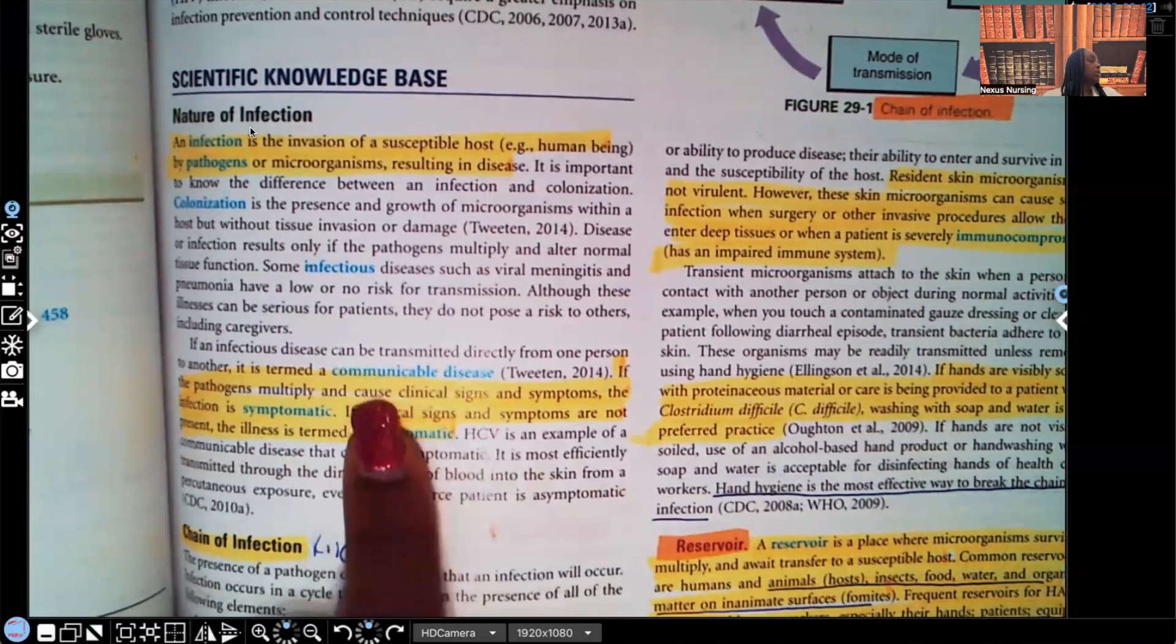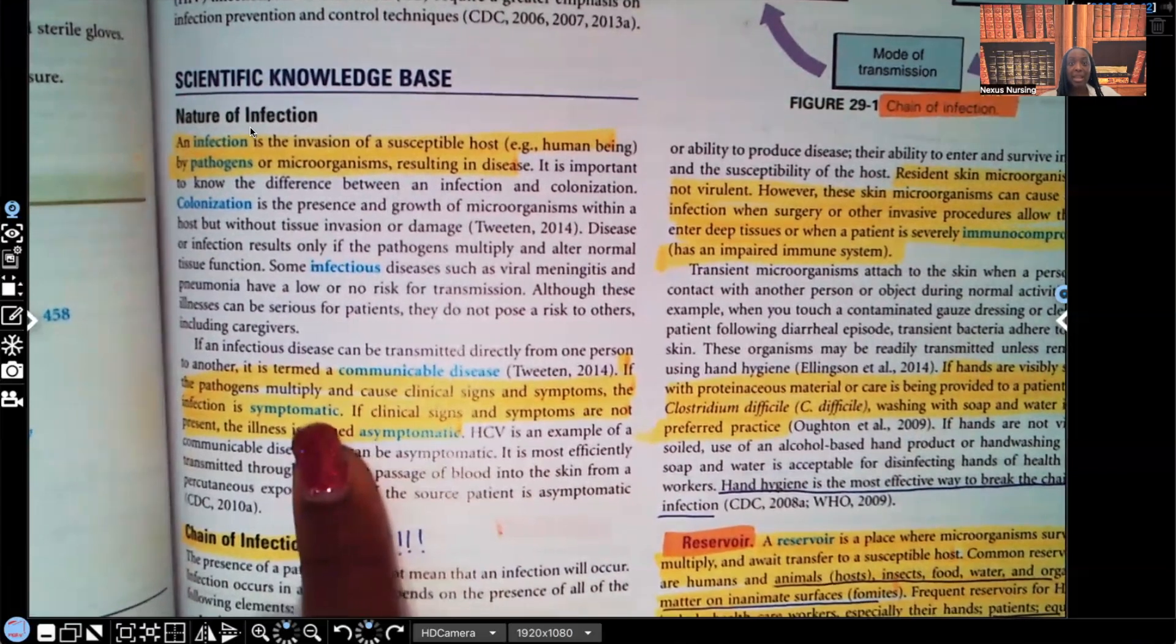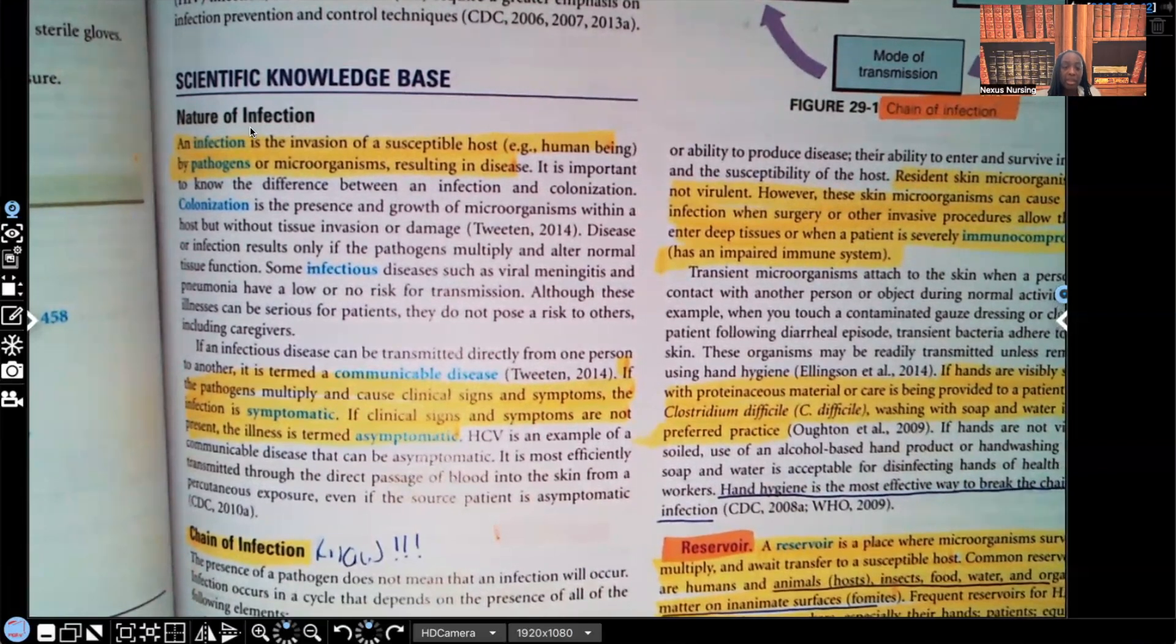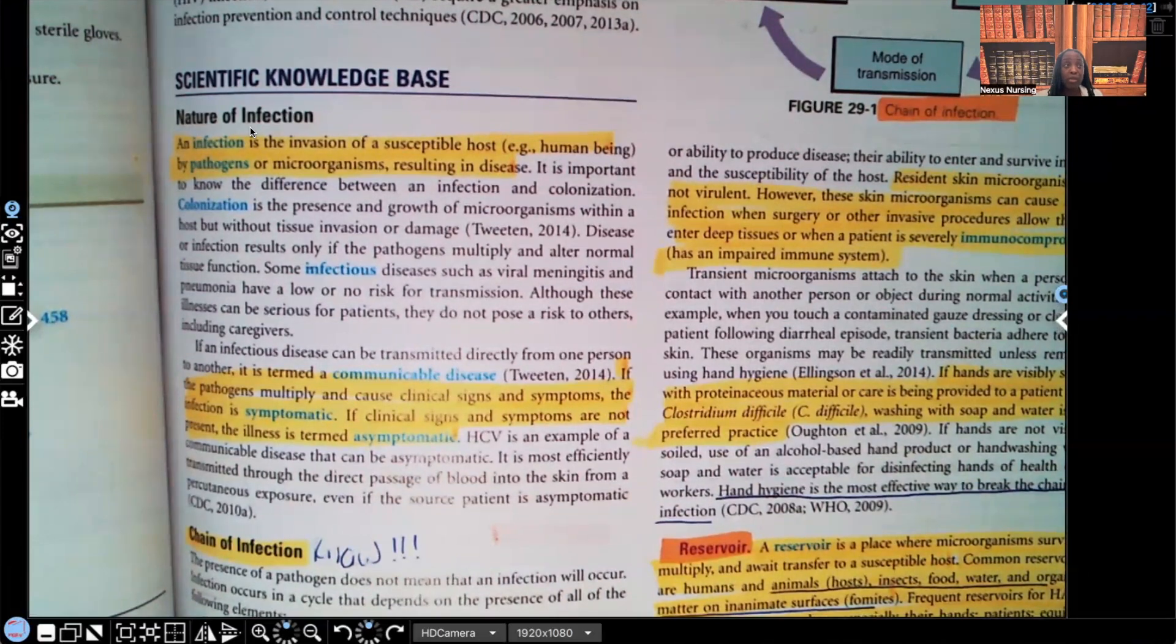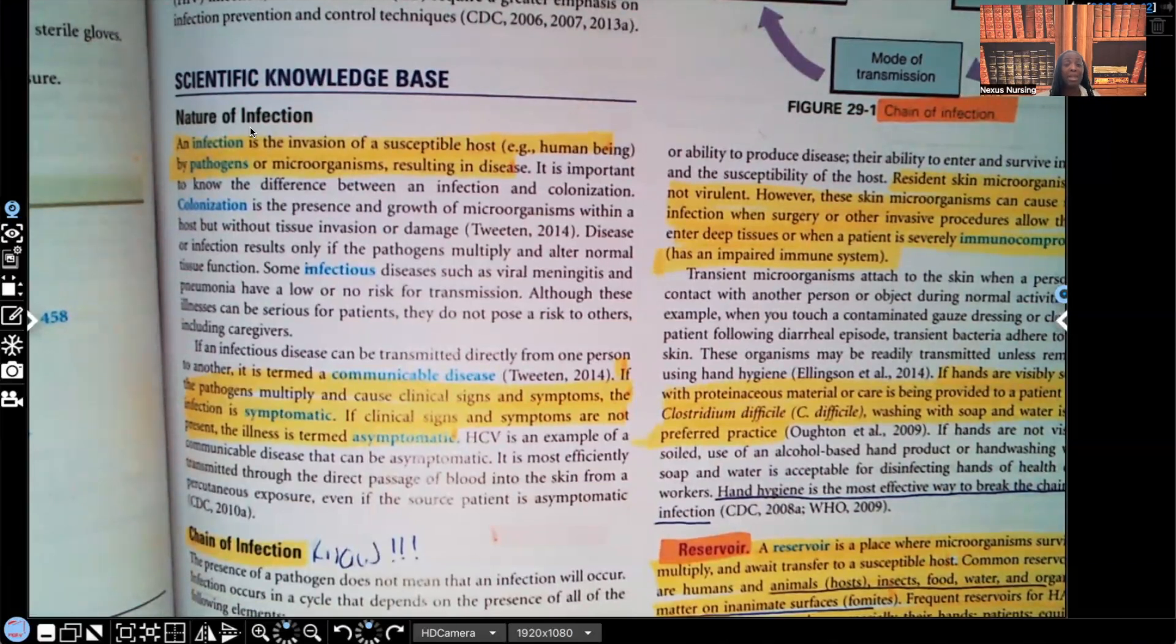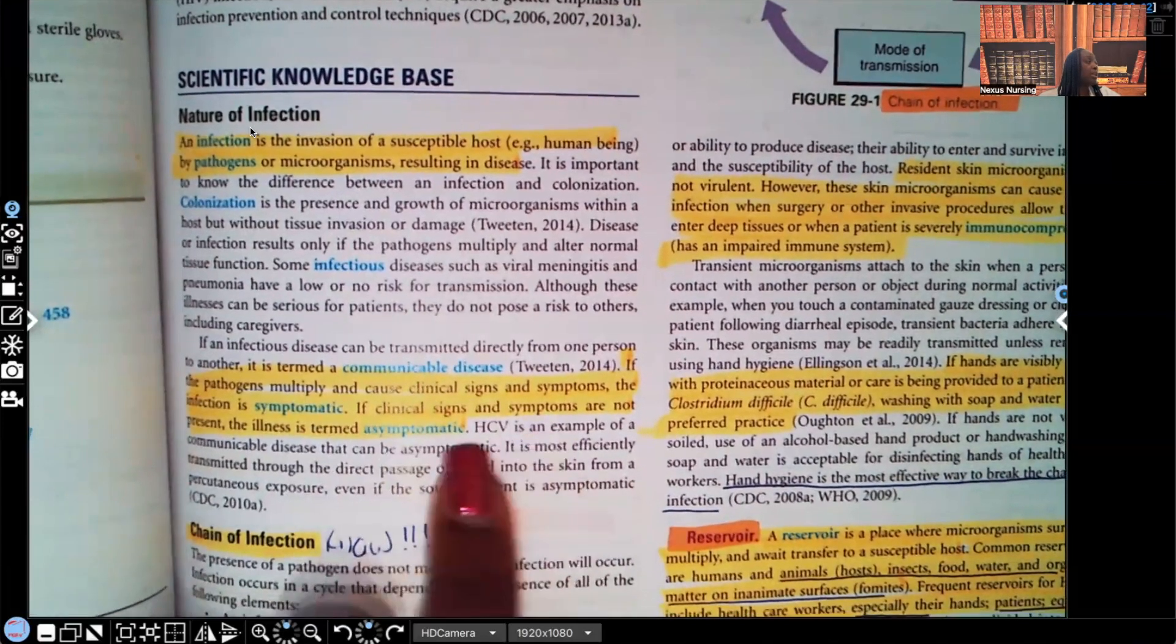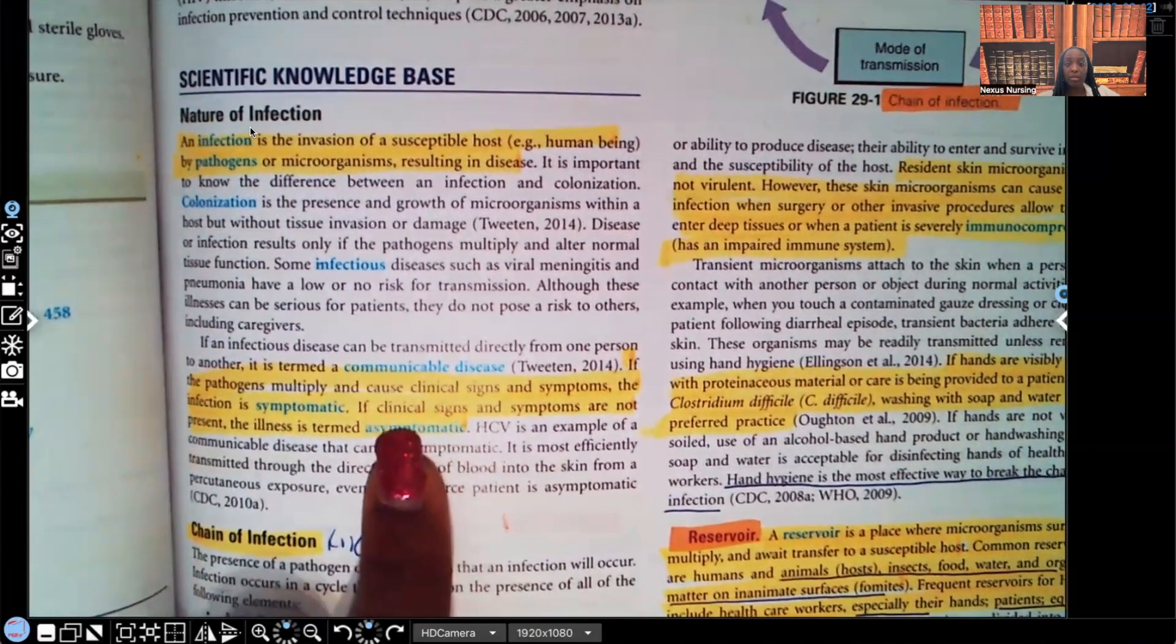Now, if you scroll down, take a look down here, look at what it says. It says if the pathogens multiply and cause clinical signs and symptoms, the infection is symptomatic. Let's stop right there. If the pathogens multiply and cause clinical signs and symptoms, then that infection is called symptomatic because the patient is exhibiting symptoms. We may see WBCs increase, redness, pain at the wound, inflammation, mucopurulent drainage, foul odor. Any of those signs and symptoms of infection. Patient's exhibiting that, then the patient is symptomatic. Let's keep going. If clinical signs and symptoms are not present, the illness is asymptomatic. Whenever you see an A in front of the word, it means without. So without symptoms.